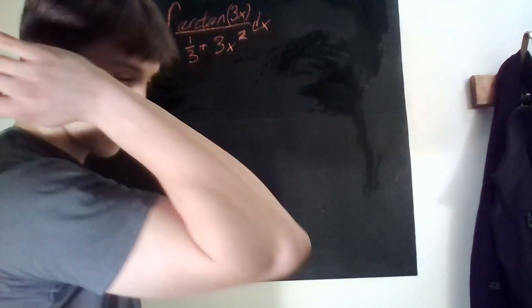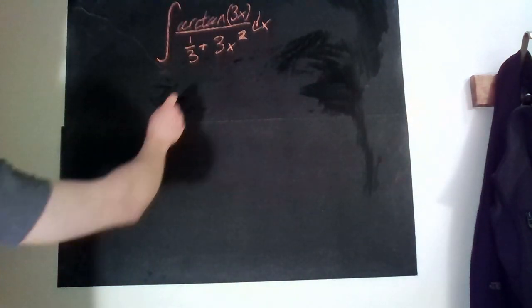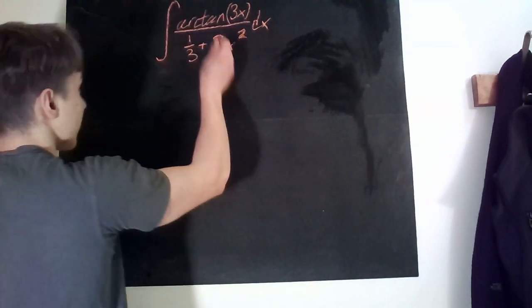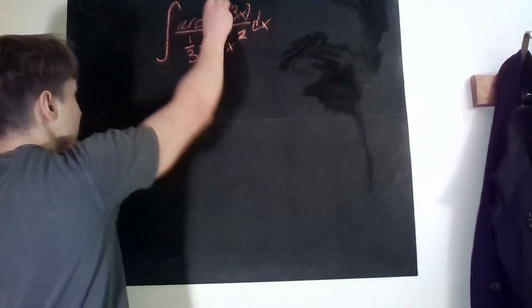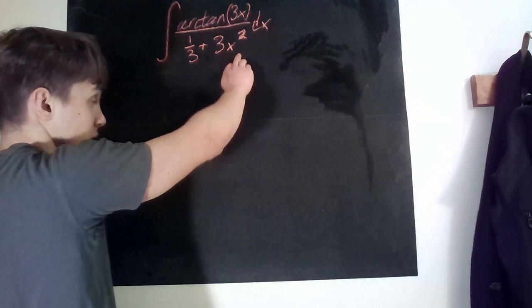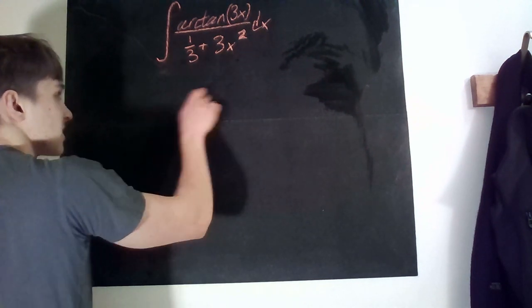So immediately when you see this you should think about the fact that we have an arctan and we have something that kind of looks like the derivative of arctan which is 1 over 1 plus x squared.